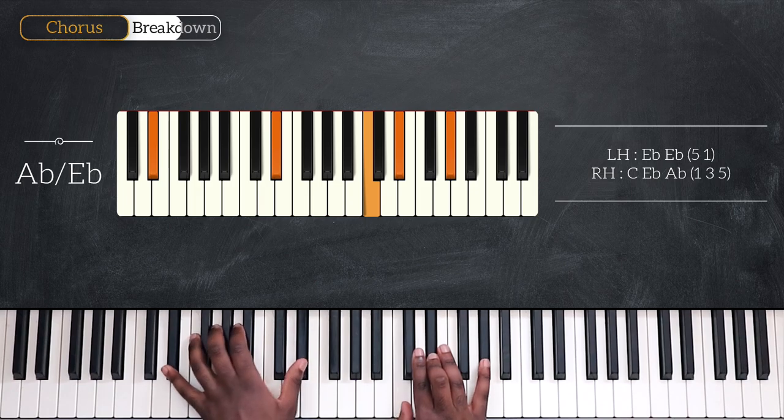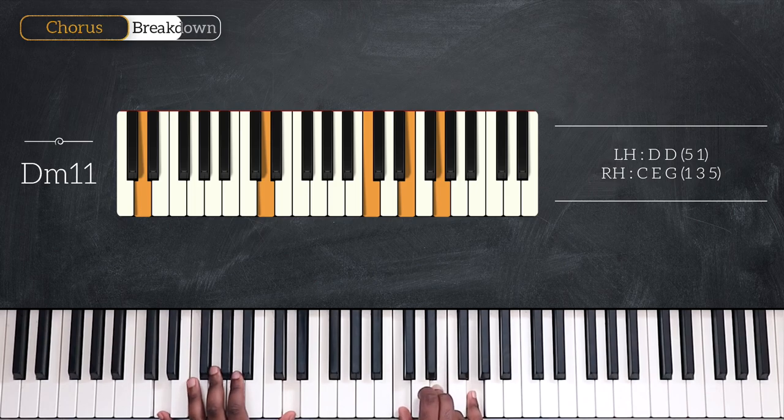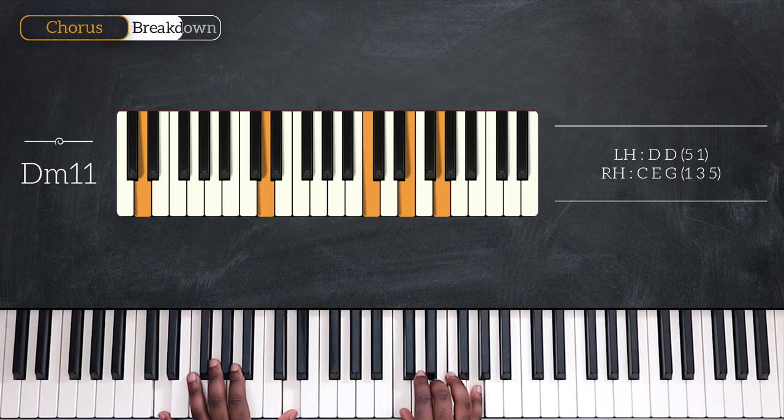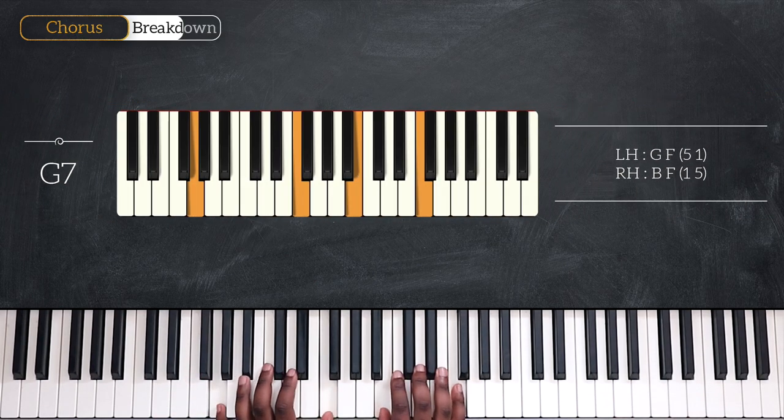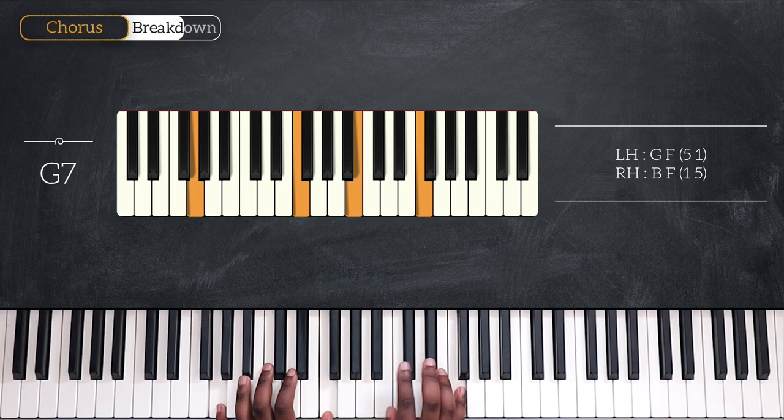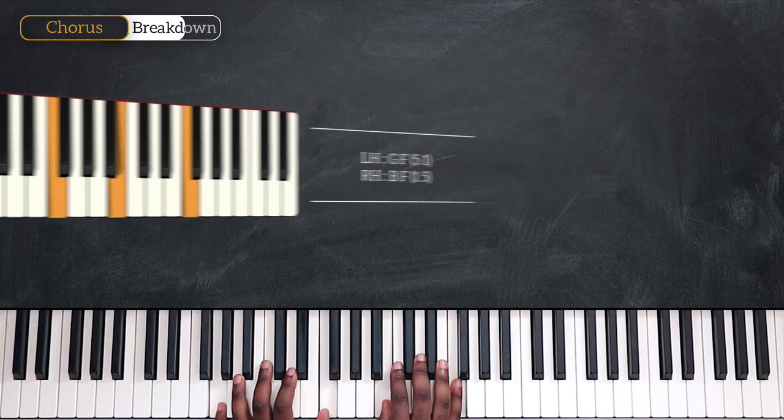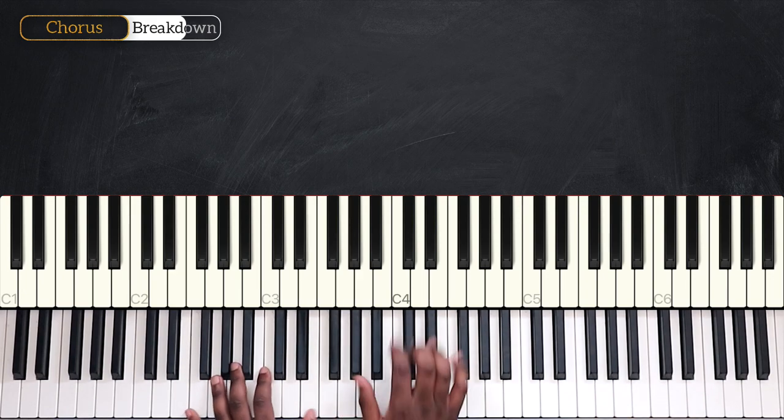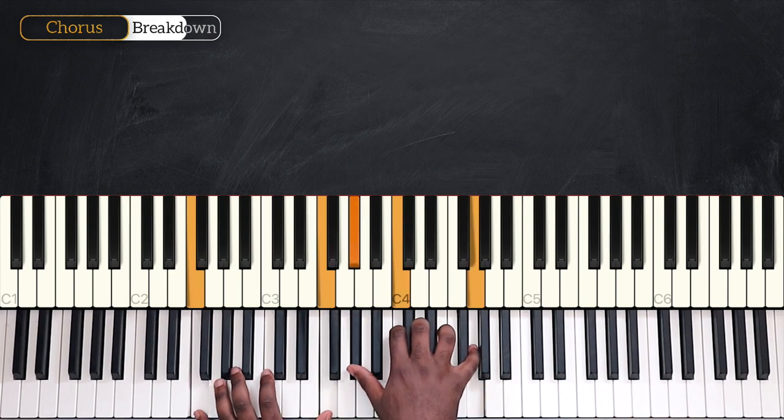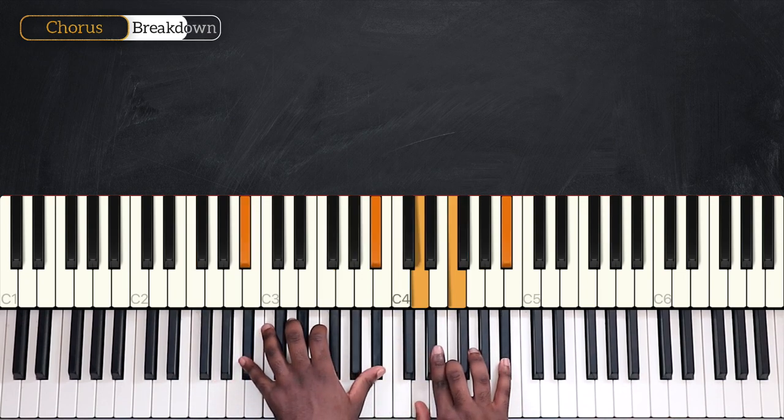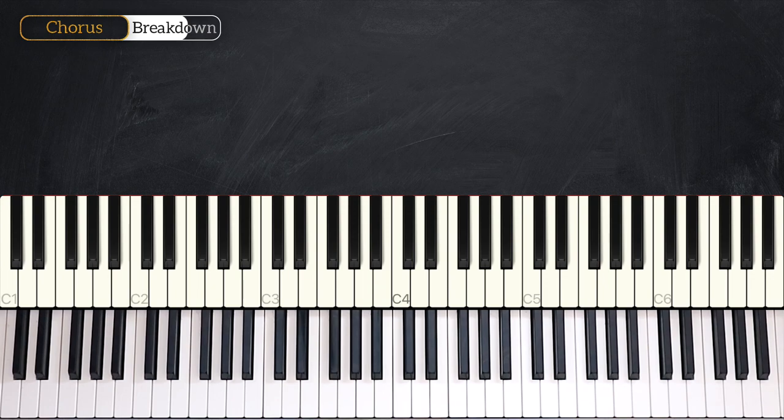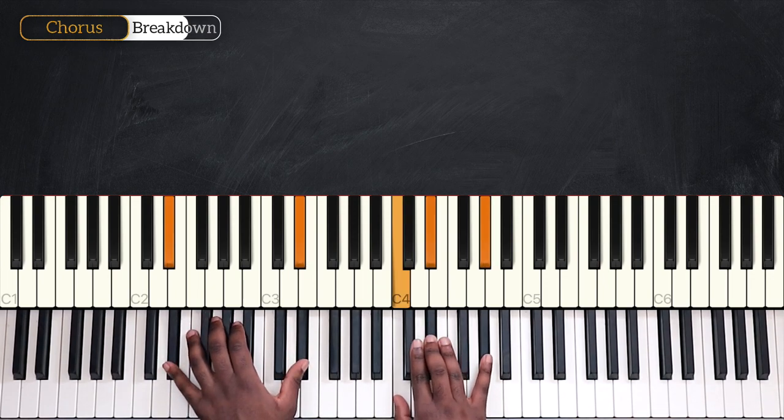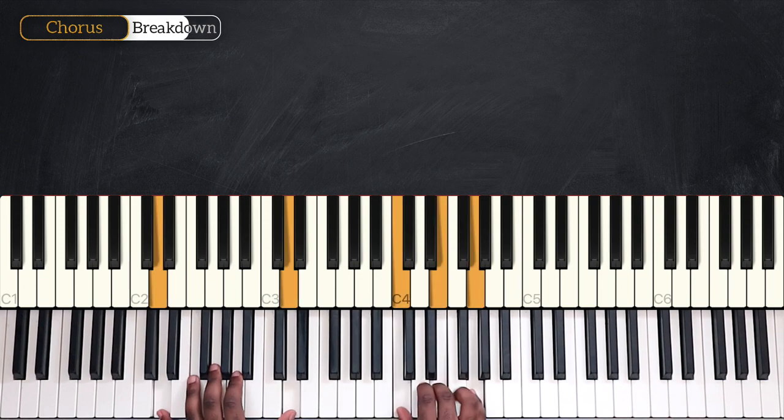Then we have D minor 11. Octave D, C, E and G. Ending on G7. Now playing B and F on the right hand. One more time. C over E, F minor 9, B flat, then we have A flat over E flat, D minor 11, G7. Here it is.